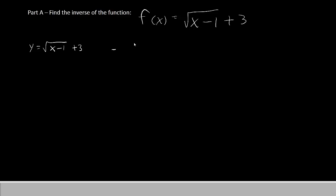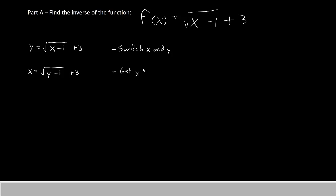To find the inverse, we will need to switch x and y. So the y becomes x and the x becomes y. The rest of the function stays the same for now, but now that we've switched, our goal is going to be to get the y by itself.